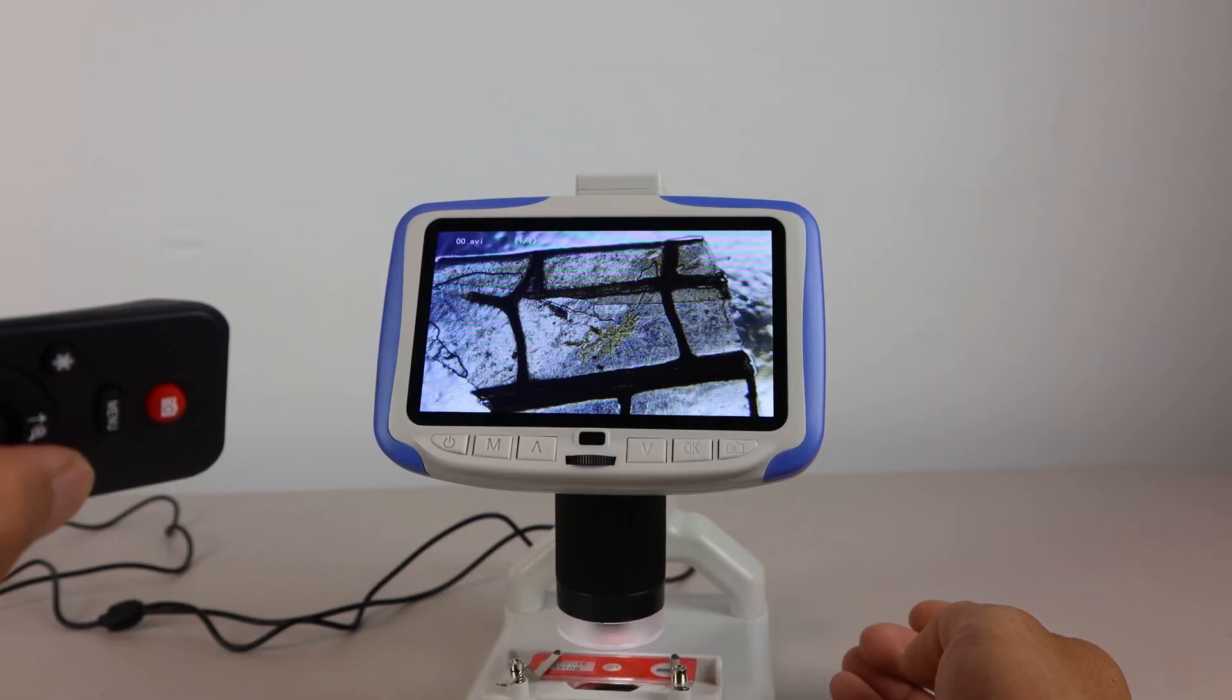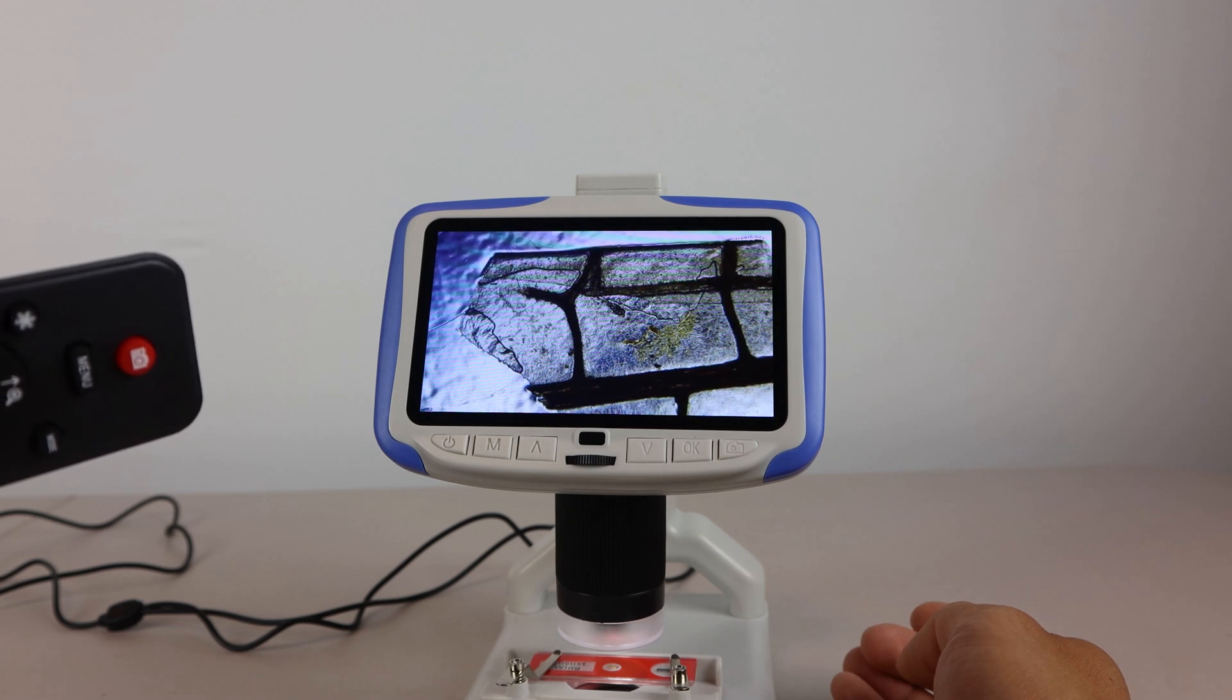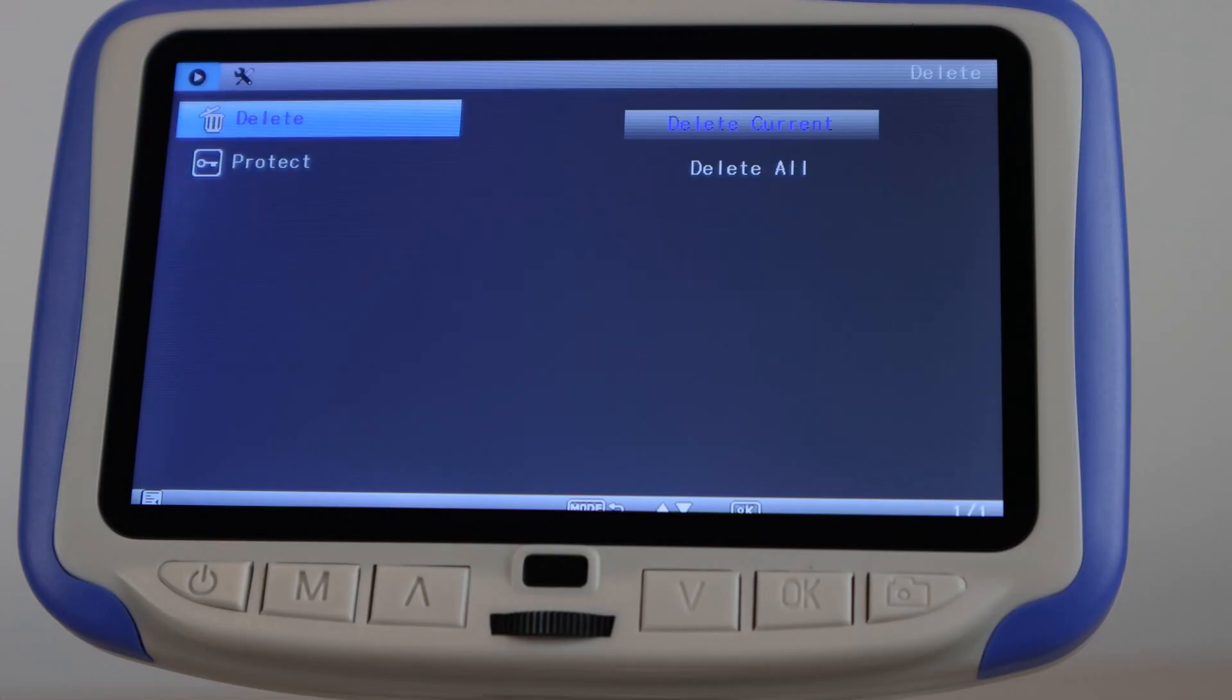The third mode is playback mode, and you can view the recorded videos and photos that are saved to the SD card. You can also choose to lock or delete them.